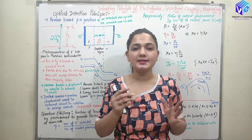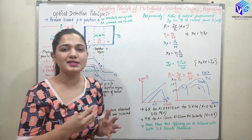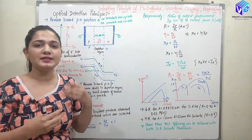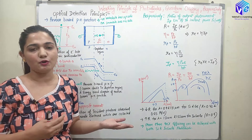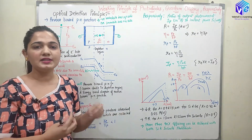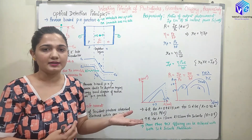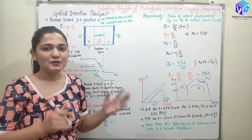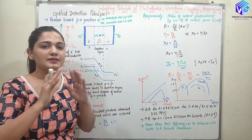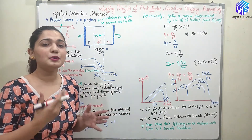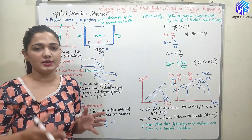A photo detector is a device which takes the optical signal as input and generates the electrical signal as the output. So it is taking the light energy and generating the current. This is happening with the help of a reversed biased PN junction.